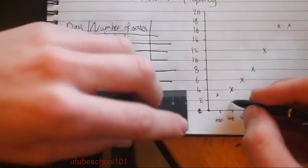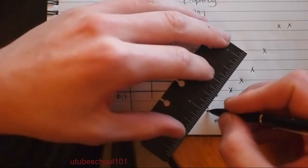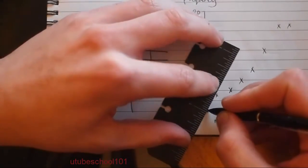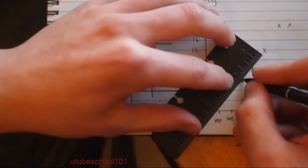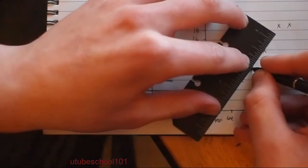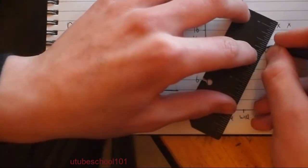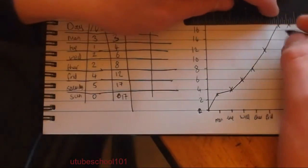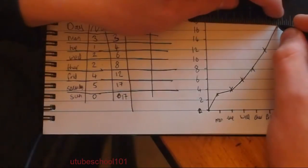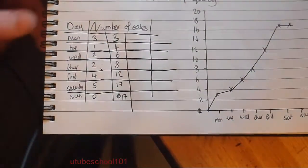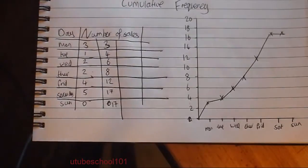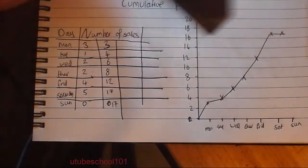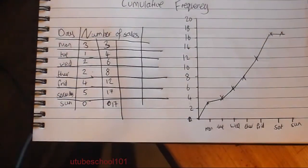If I just add them up and draw it — this is very rough, I'm just doing it quickly to demonstrate it — you can see how the sales gradually add on top of each other to reach the total sales this week of 17 sales.